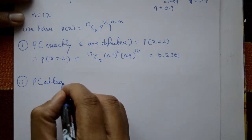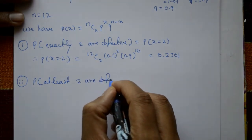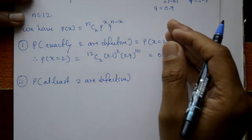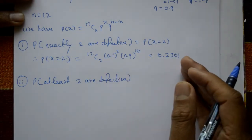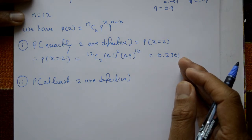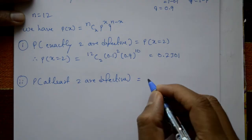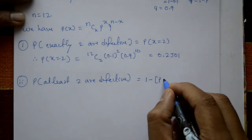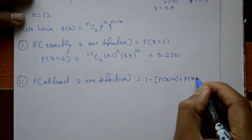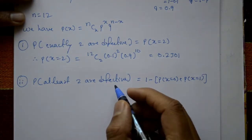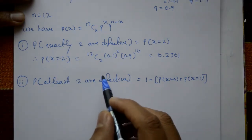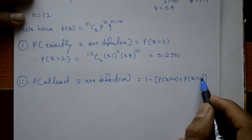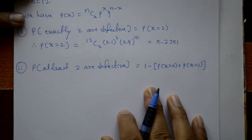For the second case, at least two are defective means a minimum of two are defective — two, three, four up to 12 are all possible. Rather than summing many terms, it is better to use the complement: 1 minus P(X = 0) plus P(X = 1). You get the same result either way.